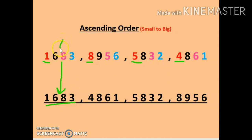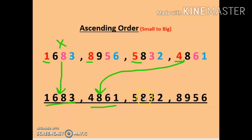So we will write 1683 here at first place, and we will put a small cross on top so that we don't consider this number again. Now we are left with 3 numbers, and out of these, 4 is the smallest, so we will write 4861 at second place and put a small cross. Next, 5 is the smallest, so we will write 5832 at third place and put a small cross.